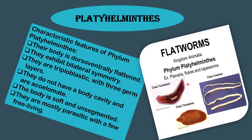Phylum Platyhelminthes comprises worms that have soft, flattened, and leaf-like or ribbon-like bodies; they are thus also called flatworms. Flatworms mostly live as parasites inside the body of animals and human beings, while some live freely in freshwater or in the sea. They have hooks and suckers on their head around the mouth, which help them grip the host body. They have one opening for both food intake and expulsion of waste. Tapeworm, liver fluke and Planaria are flatworms.